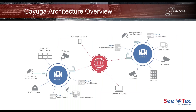We'll start with this line diagram and break it down to look at how the building blocks are put together within the Cayuga VMS. This diagram shows two locations and how they are linked — whether directly over the internet or through a VPN. One key building block is the Core Service Master, or CSM, which holds the database and the information about the layout, cameras, users, and so on.